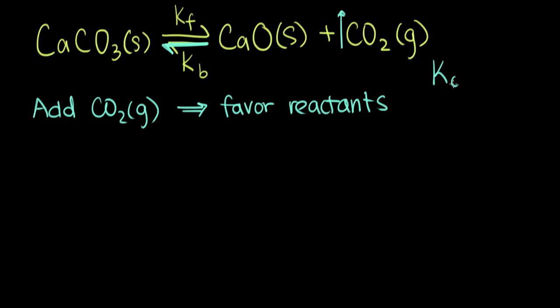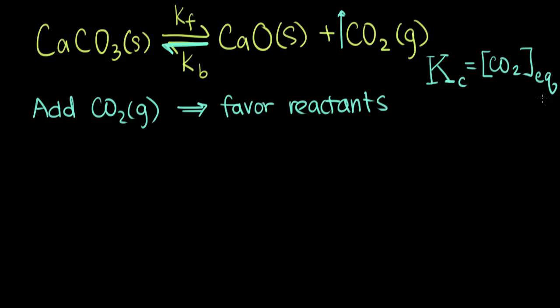Another way we can see this is by looking at the equilibrium constant for this reaction. We can write our equilibrium constant K — capital K. We can write it in terms of molar concentration as Kc. The expression will be the product concentration, so our CO₂ gas concentration, and that's it. When we write Kc, we include concentrations of gases and solutions, but we don't include solids. So Kc is just the concentration of CO₂ at equilibrium — that's the equilibrium concentration.